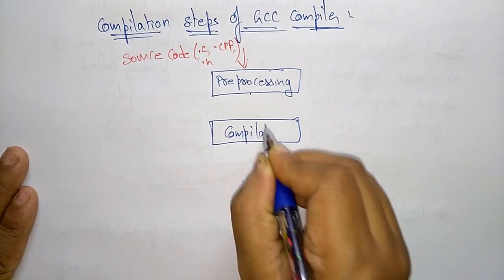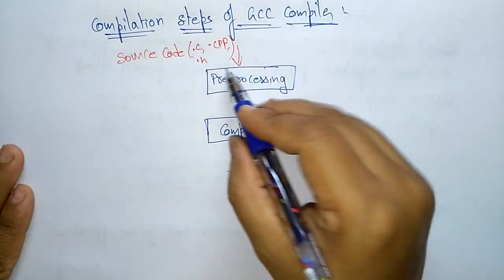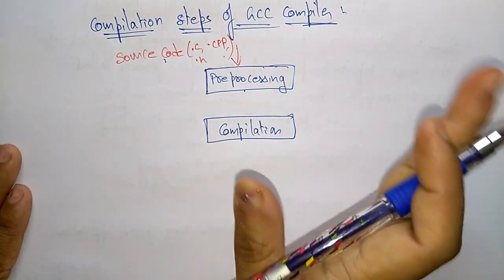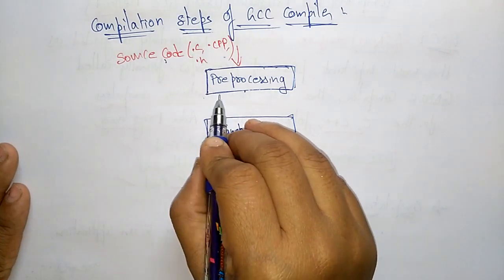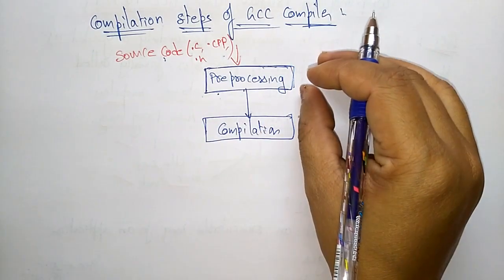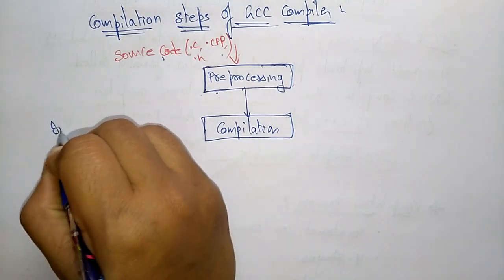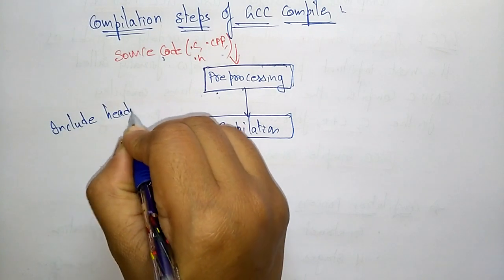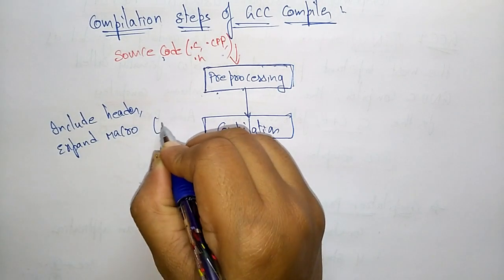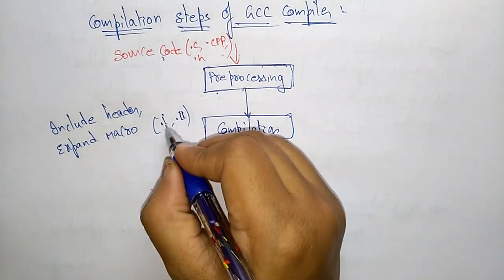After the source file, it goes through pre-processing and then compilation. The preprocessor prepares the source file for conversion. The compilation step translates the code and includes all headers and expands macros. The output of this stage is in the form of .i, .l, or .ll files.